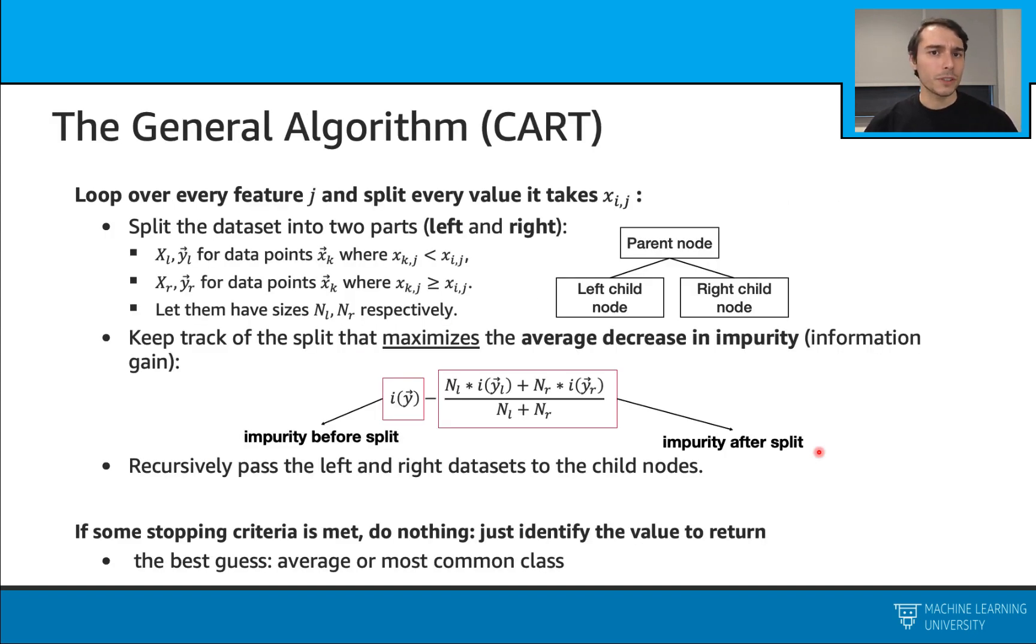Let's also remember the formal algorithm behind this. We call this algorithm CART. With this algorithm, we will loop over every feature j. And then we will split every value it takes, xij. So we will split over all data points.